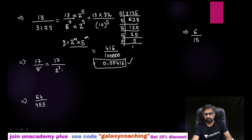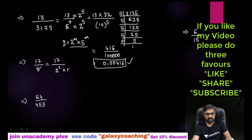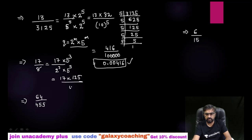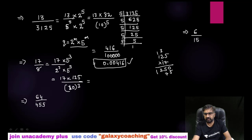We need to make the powers of 2 and 5 equal. Since there is no 5 in the denominator, we multiply numerator and denominator by 5 cubed. So we get 17 multiplied by 125 upon 10 cubed, which equals 2125 upon 1000. Placing the decimal 3 places in, the answer is 2.125.